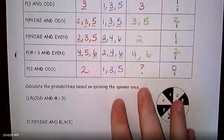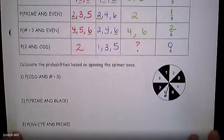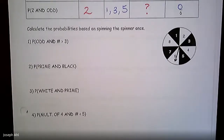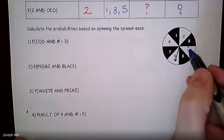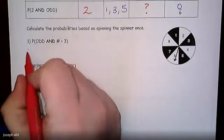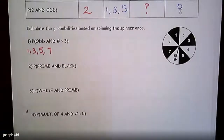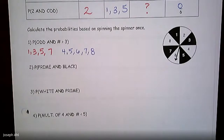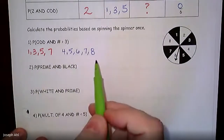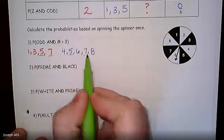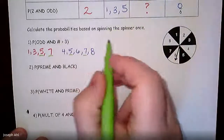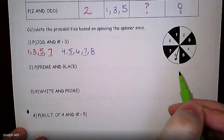Now we're going to extend this to other scenarios, including a spinner. The probability of getting an odd AND a number bigger than 3 on this spinner: the odd numbers are 1, 3, 5, 7, and the numbers bigger than 3 are 4, 5, 6, 7, and 8. What do these two groups have in common? They both have 5 and 7. So with those two numbers out of 8 total possibilities on the spinner, the probability is 2 out of 8.